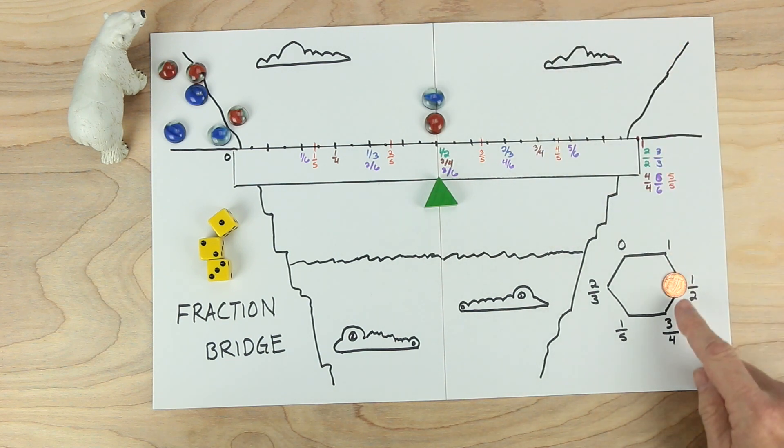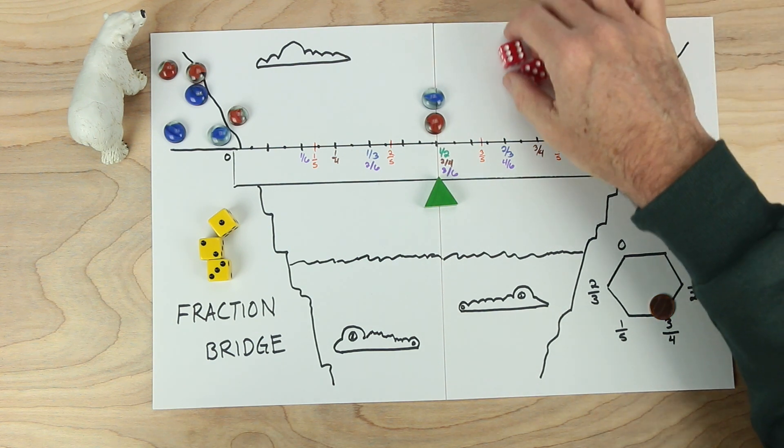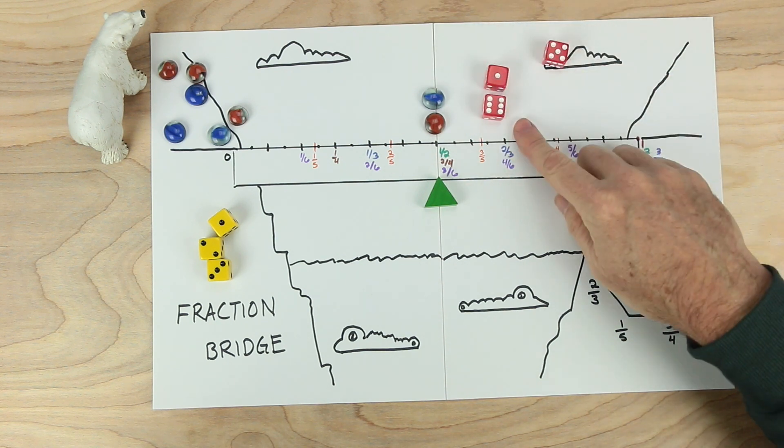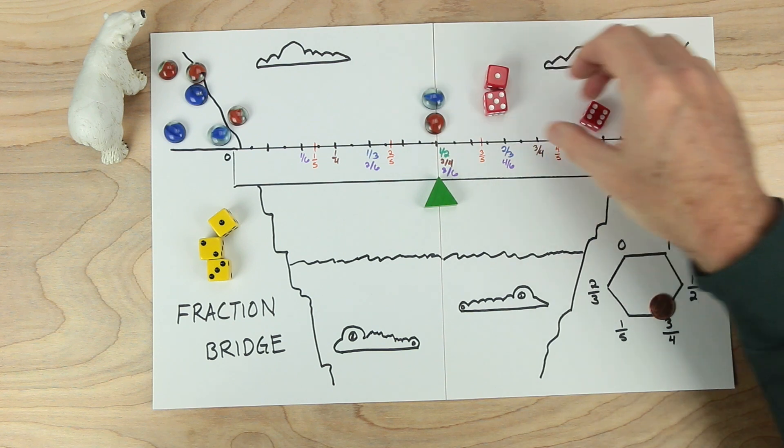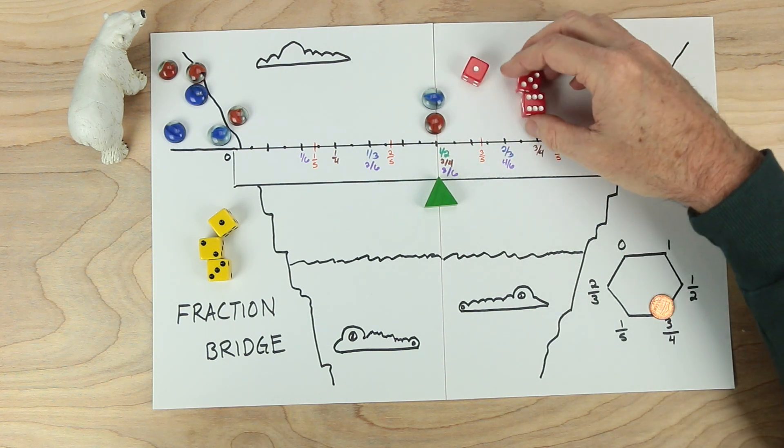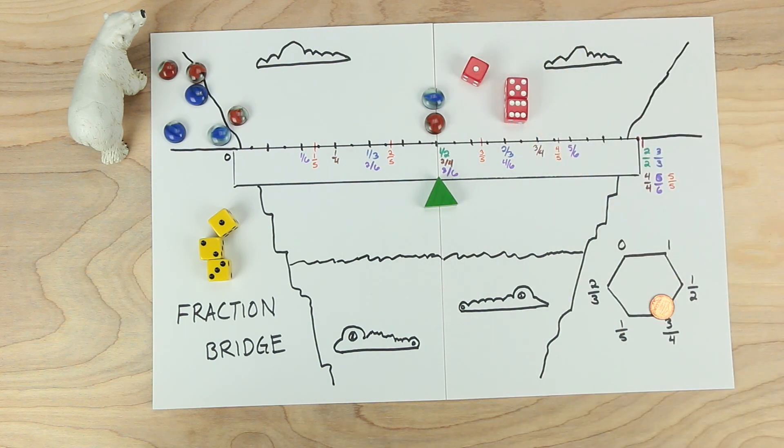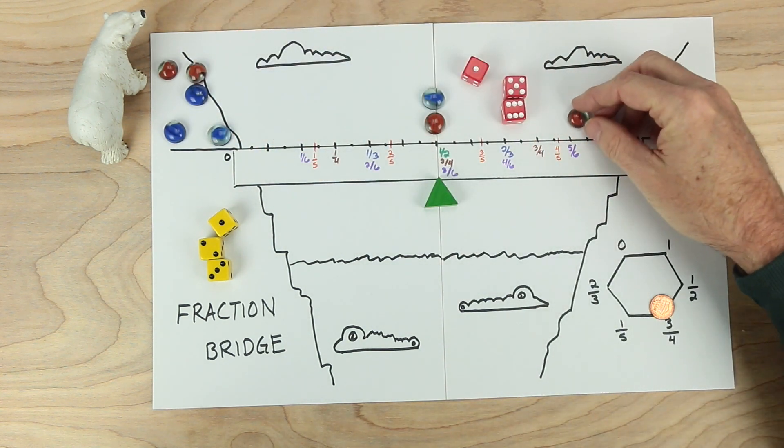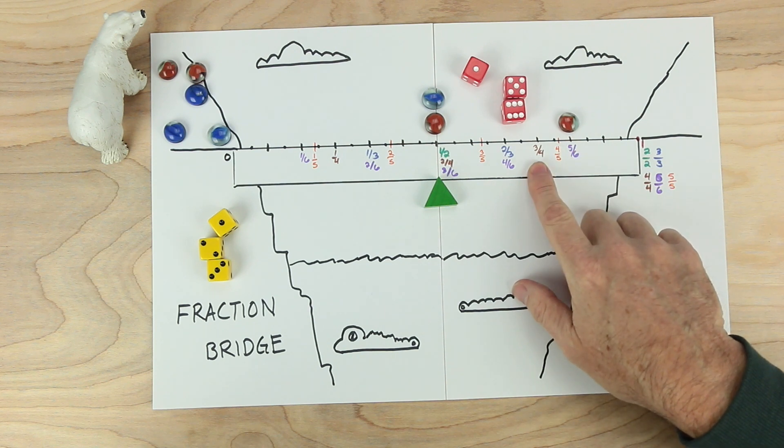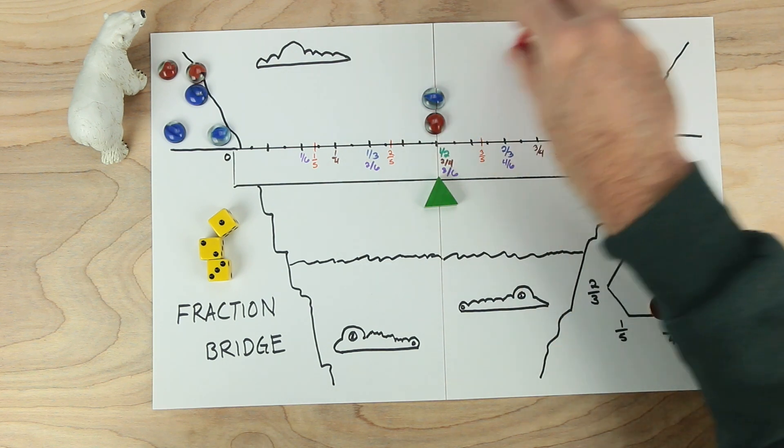Red goes again. But this time, we're trying to get to three fourths. Three fourths is the magic number. So red rolls the dice. And red has these possibilities. Red could make one sixth, red could make one fifth, or red could make five sixths. Which one do you think is the best for getting close to three fourths? Red decides to make the five sixths, which is right here. Look where three fourths is. Five sixths and three fourths. That's great. So red's had a turn.